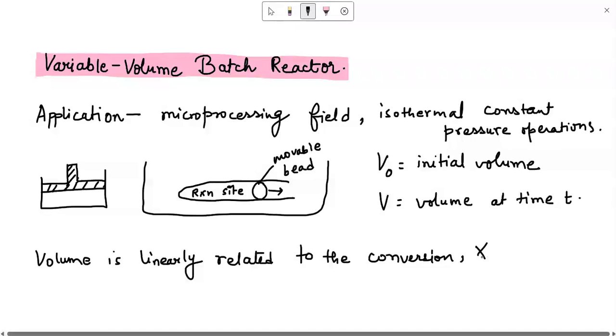Conversion we are denoting as XA. This is the typical nomenclature that we have used. We will write this linear relation as V equals to V0 multiplied by 1 plus epsilon A XA.